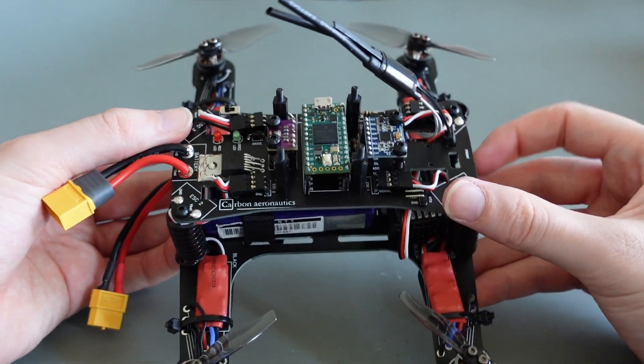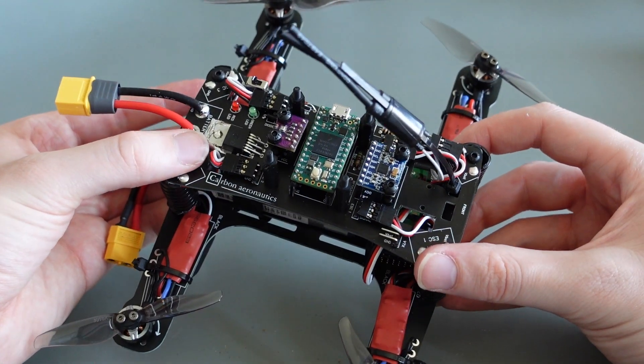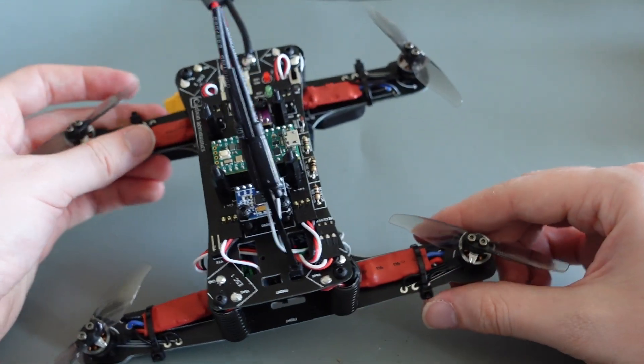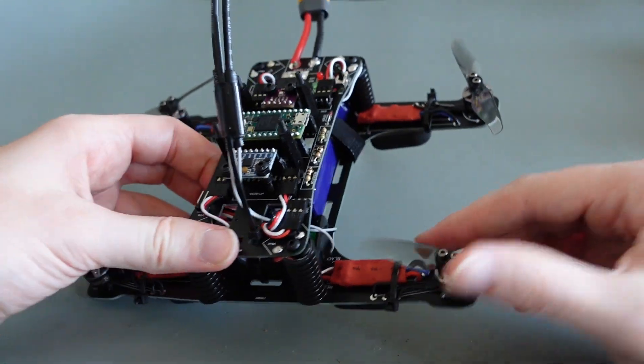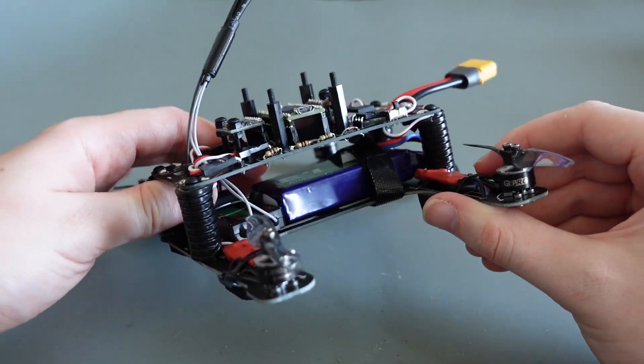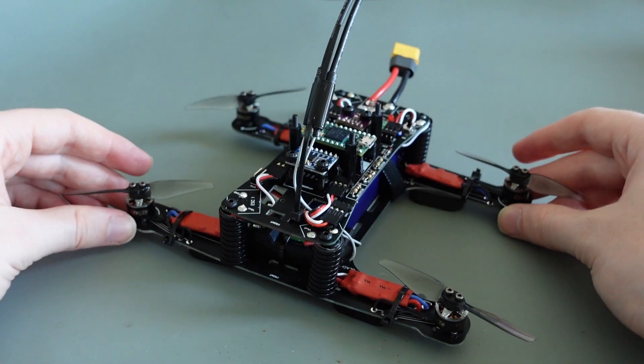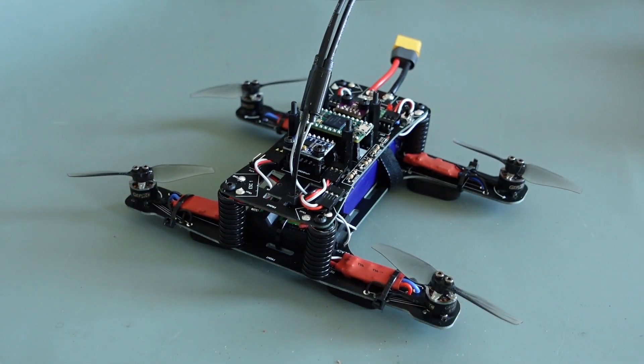You already know how to control the motors with your ESC, how to measure the rotation rate with the gyroscope, and how to receive and read commands with your radio transmitter and receiver. These are all essential ingredients, but you still need to learn how they have to work together to be able to fly.